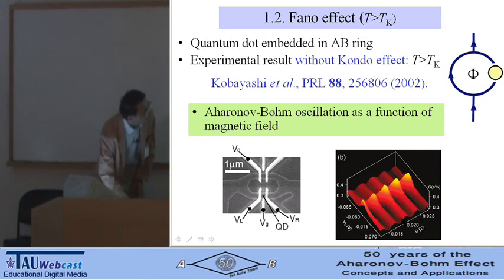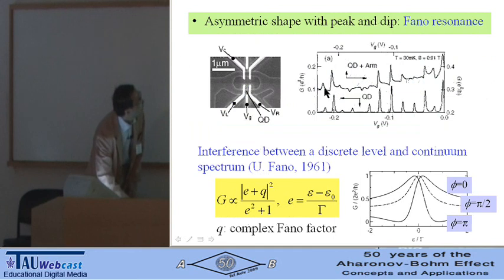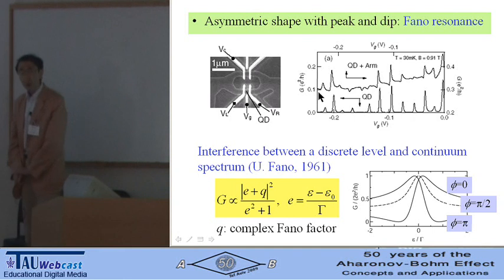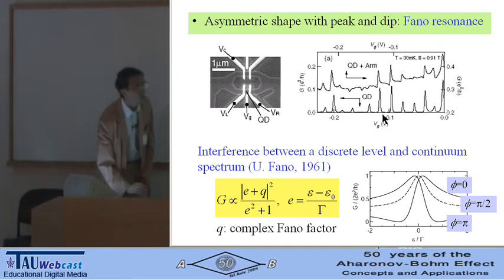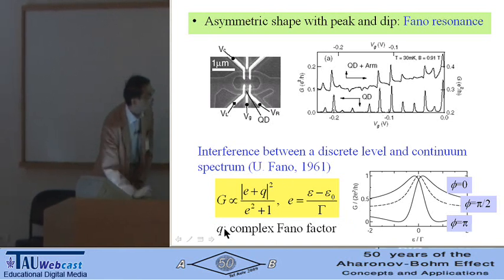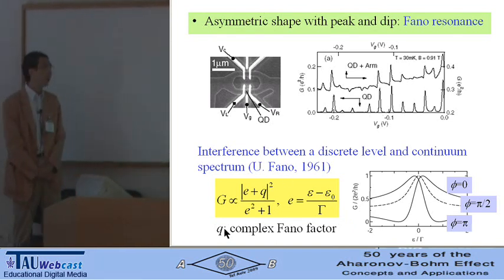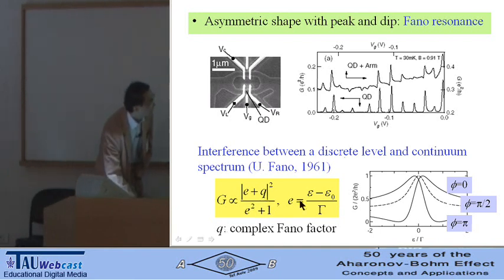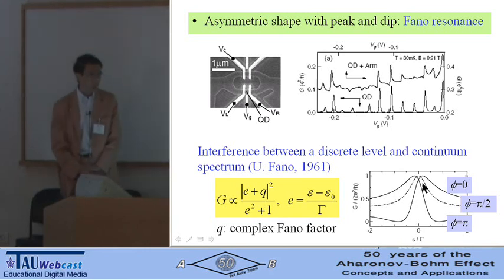Then, fixing the magnetic field and changing the gate voltage, they observed an asymmetric shape with peak and dip, so-called Fano resonance. The Fano resonance is due to the interference between a discrete level in the quantum dot and continuum spectrum in the leads. Conductance is given by this equation, and q is a complex Fano factor in the magnetic field. The shape of the Fano resonance changes with the magnetic flux inside the ring.